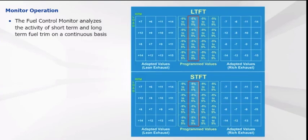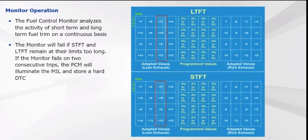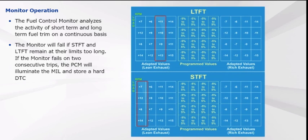The fuel control monitor analyzes the activity of short-term and long-term fuel trim on a continuous basis, making it a continuous monitor. If STFT and LTFT remain at their limits too long — as would be the case with a severe air leak, for example — the fuel control monitor will fail. If the monitor fails on two consecutive trips, the PCM will illuminate the MIL and store a hard DTC.